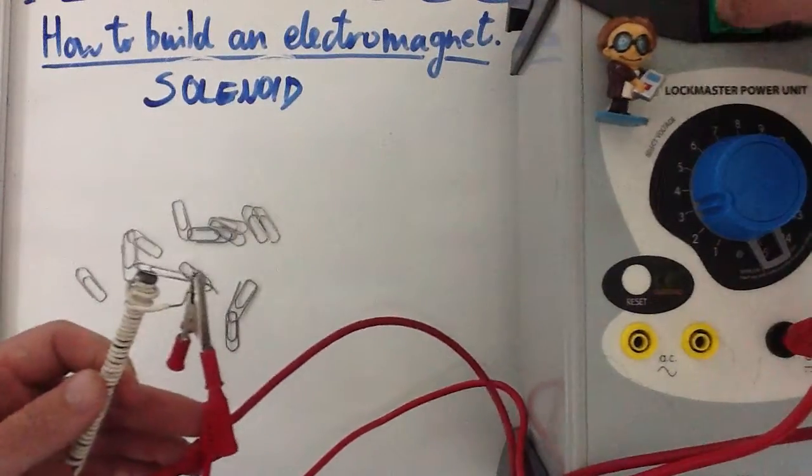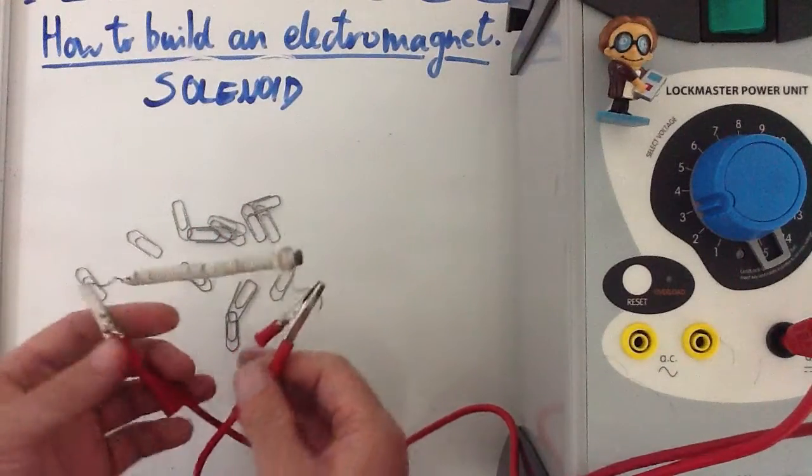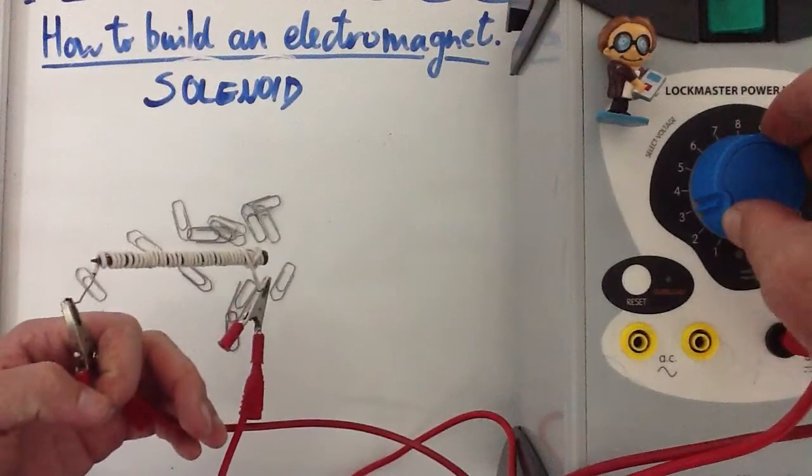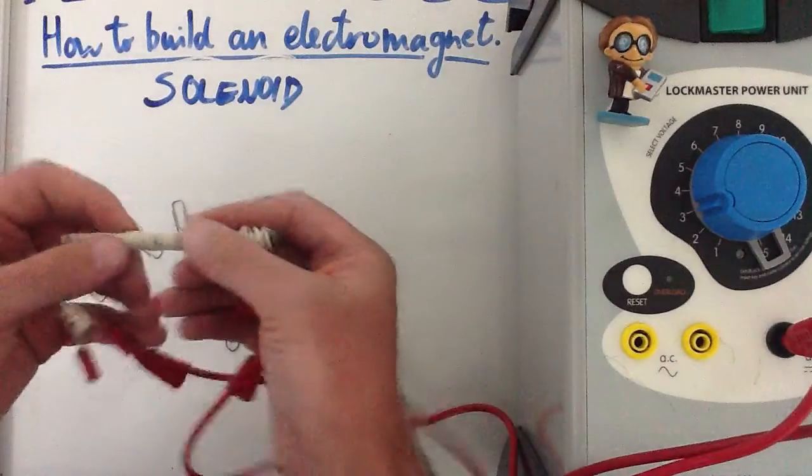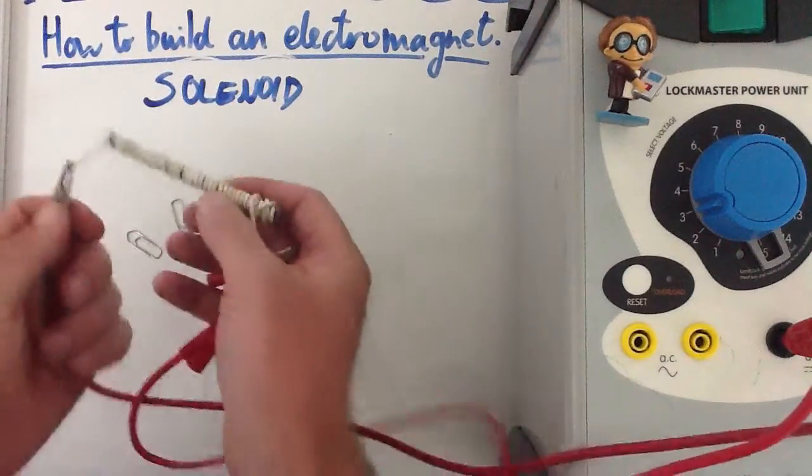Electromagnets are great because you can turn them off, which you can't do with a bar magnet. You can also make them extremely strong by not only adding an iron core, you can increase the voltage on the power pack, you can add more coils wound more tightly, or you can use thicker wires on the solenoid.